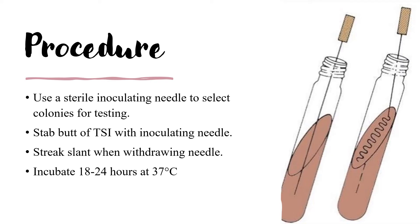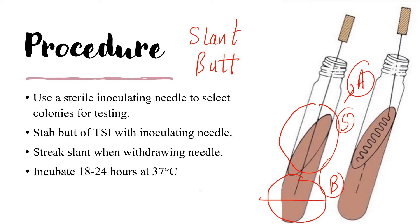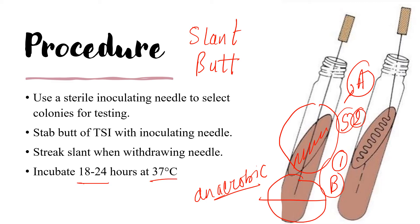Regarding the procedure: the TSI test tube has two parts — the upper part is called the slant, and the lower part is called the butt. The slant has aerobic conditions and the butt has anaerobic conditions. The procedure is: first, stab the microorganisms into the butt; then streak on the slant surface. After inoculation, incubate for 18 to 24 hours at 37 degrees centigrade, then interpret the results.